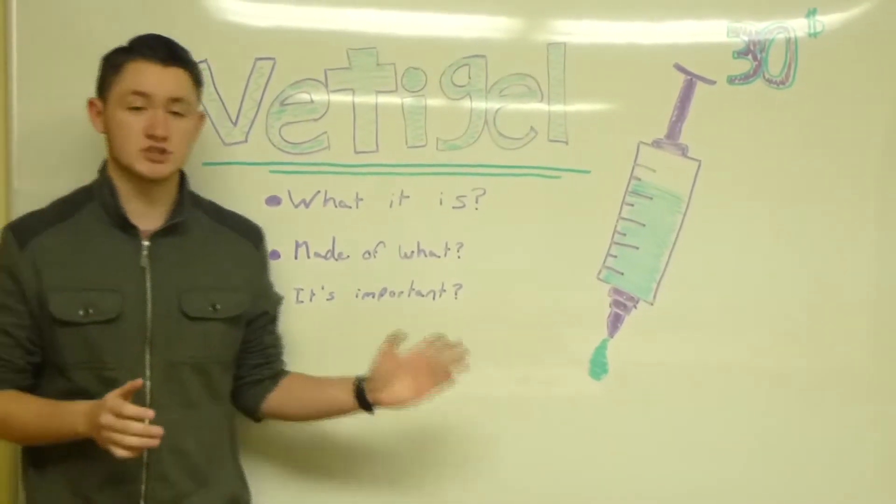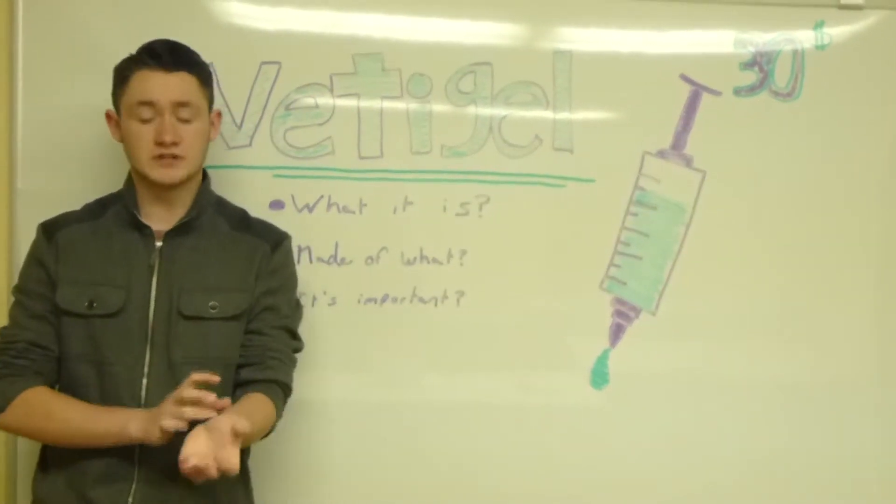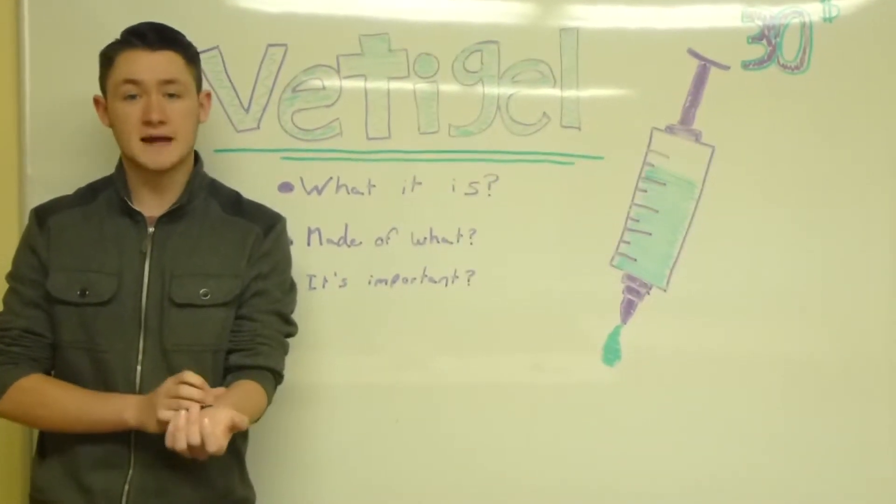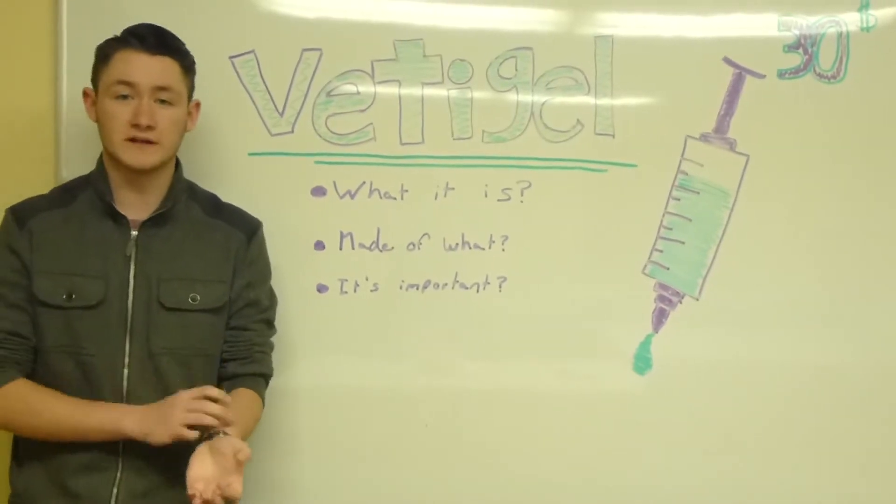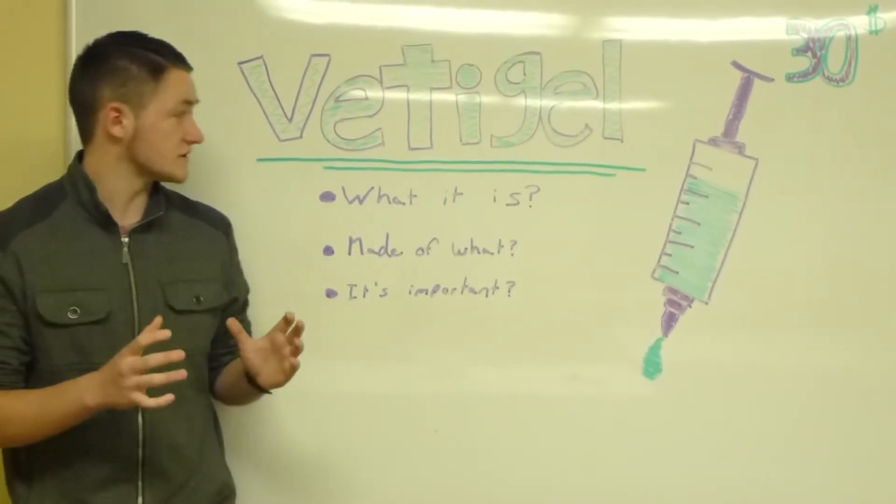But at the same time, because this is a gel-based polymer, what it's doing is creating a mechanical vacuum-like bond to rapidly stop the bleeding where it occurs, allowing no further bleeding to happen where Vettigel doesn't exist, which is greatly unique.